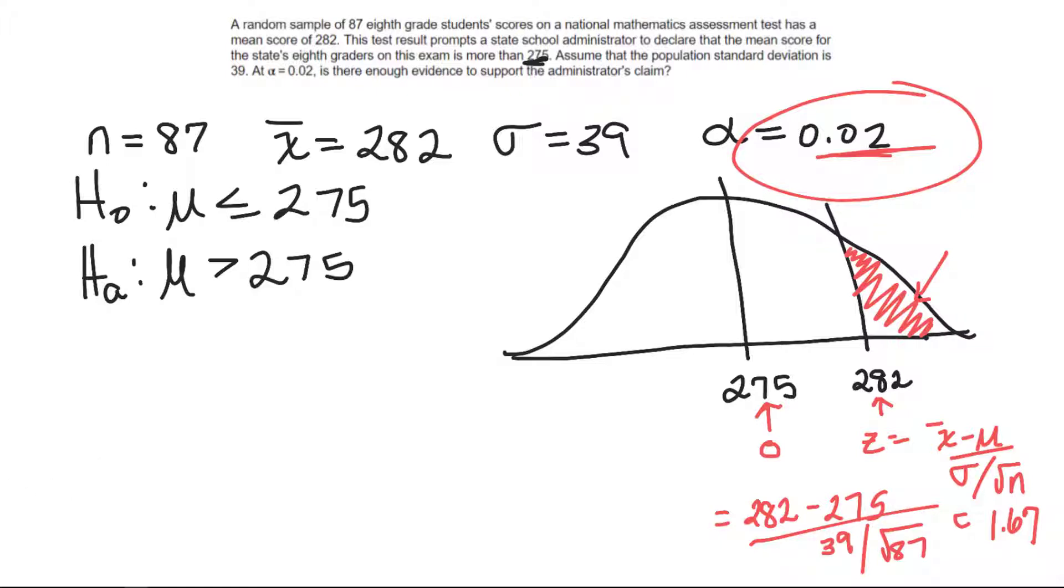Remember, if the p is low, the null must go. If the p is high, the null must fly, all that good stuff. Well, how do I find a p-value? Well, 1.67, I go get my table.